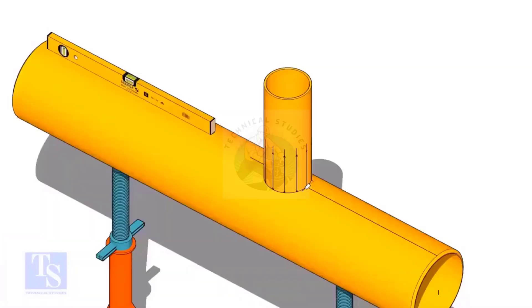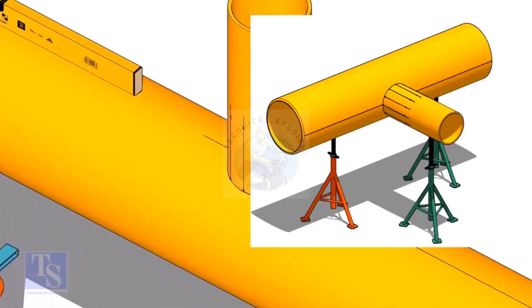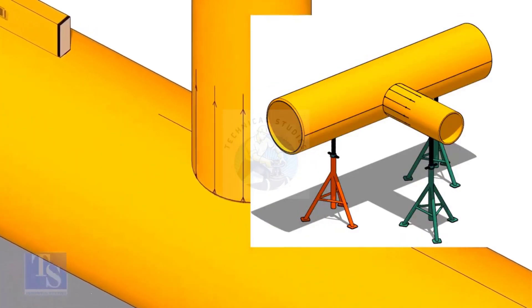Tack weld the branch on the header just to stand it vertically. If the pipes are large, you can do it in the horizontal position also.